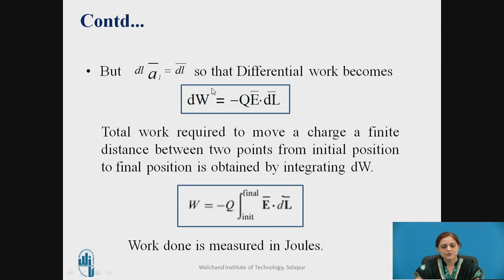This work equation is the differential work equation. So as you want to find out the total work then integrate this equation with respect to initial and final position. Thus, the final equation of the work becomes W equal to minus Q integral from initial to final position of E bar dot DL bar. The work done is measured in Joules.